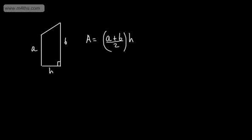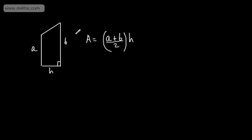The trapezium rule takes the x-axis and splits it into equal strips. We then approximate the area under the curve using a number of these trapezia. The more strips you use, the better the estimate for the area will be. As h becomes smaller and we get more strips, the accuracy of our estimate becomes much better.